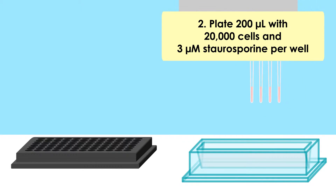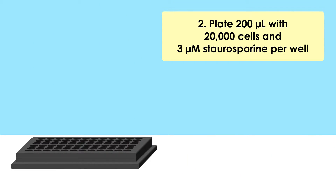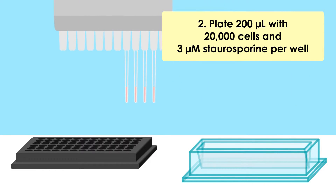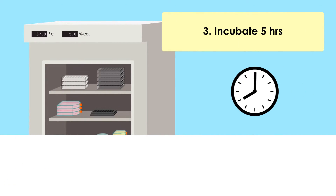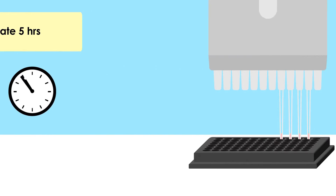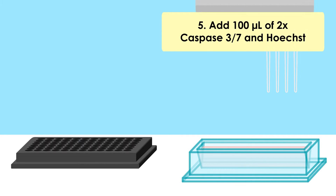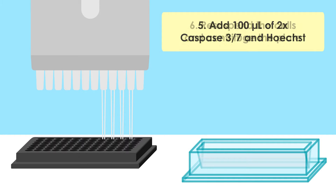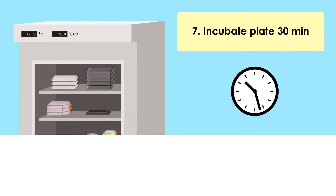Based on the measured concentration of your cells, adjust the volume and per well plate 20,000 cells with either 3-micromolar staurosporine or vehicle control in a volume of 200 microliters. After a 5-hour incubation, remove 100 microliters from each well and add 100 microliters of 2x caspase 3-7 and Hoechst staining solution to each well. Re-suspend the cells and centrifuge the plate. Allow the plate to incubate at 37 degrees Celsius for 30 minutes.